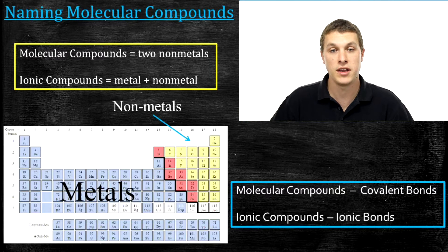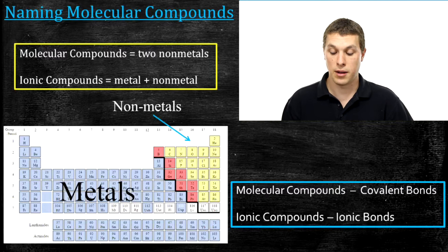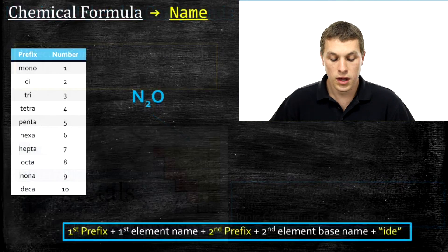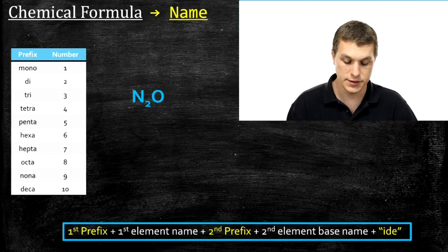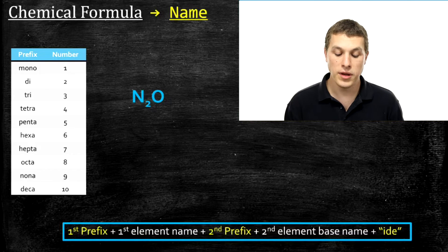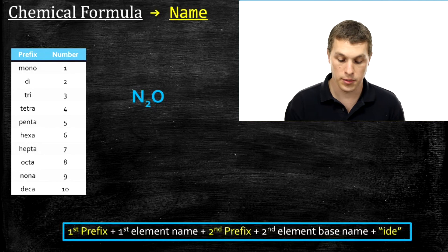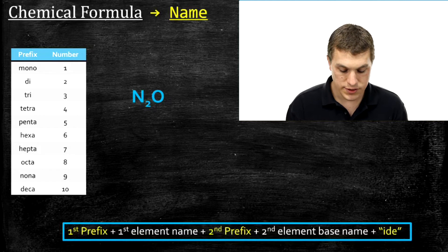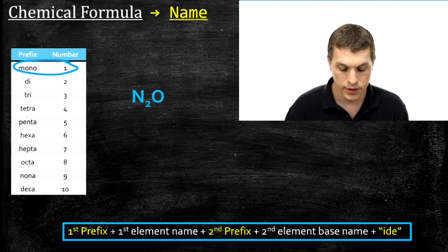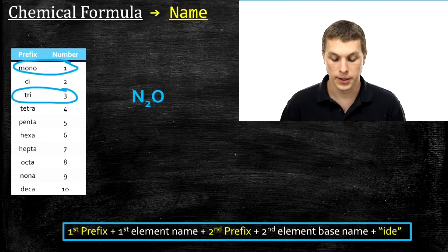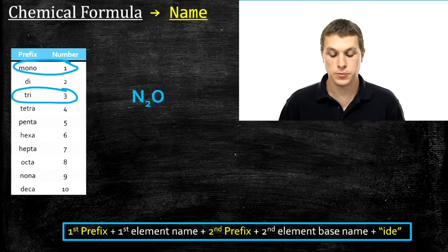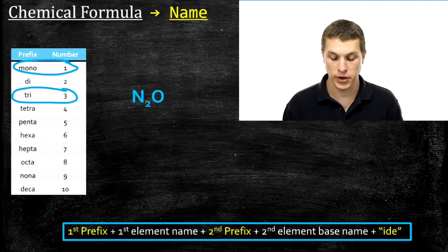If you see a metal plus a nonmetal, you need to use a different set of rules — the rules for naming ionic compounds. For naming molecular compounds, we use a set of prefixes to indicate how many of each element type we have in our molecule. For example, the prefix mono means one, and the prefix tri means three.